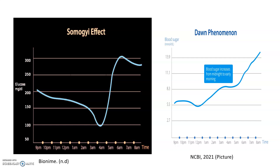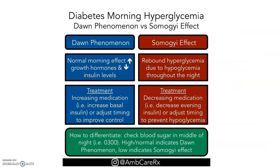They get too much insulin — that is the Somogyi effect. With the Dawn phenomenon, they did not get enough insulin. So this is where you figure out: when do I increase the insulin, and when do I decrease the insulin?